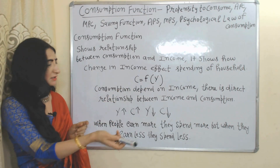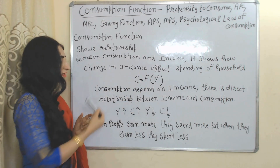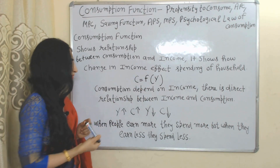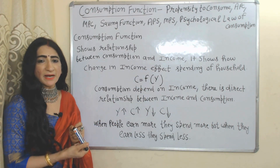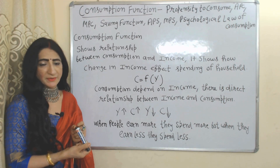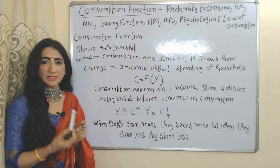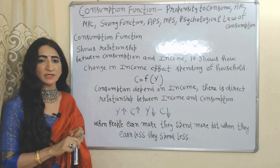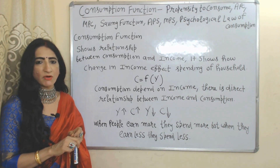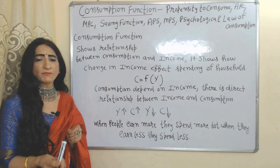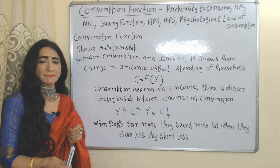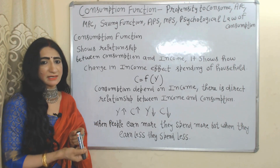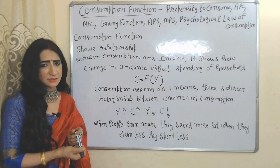Consumption is a function of income. C represents consumption and Y represents income. Consumption depends on income — as income increases, consumption also increases. As income falls, consumption also falls. Obviously, when people earn more they spend more, but when they earn less they spend less.